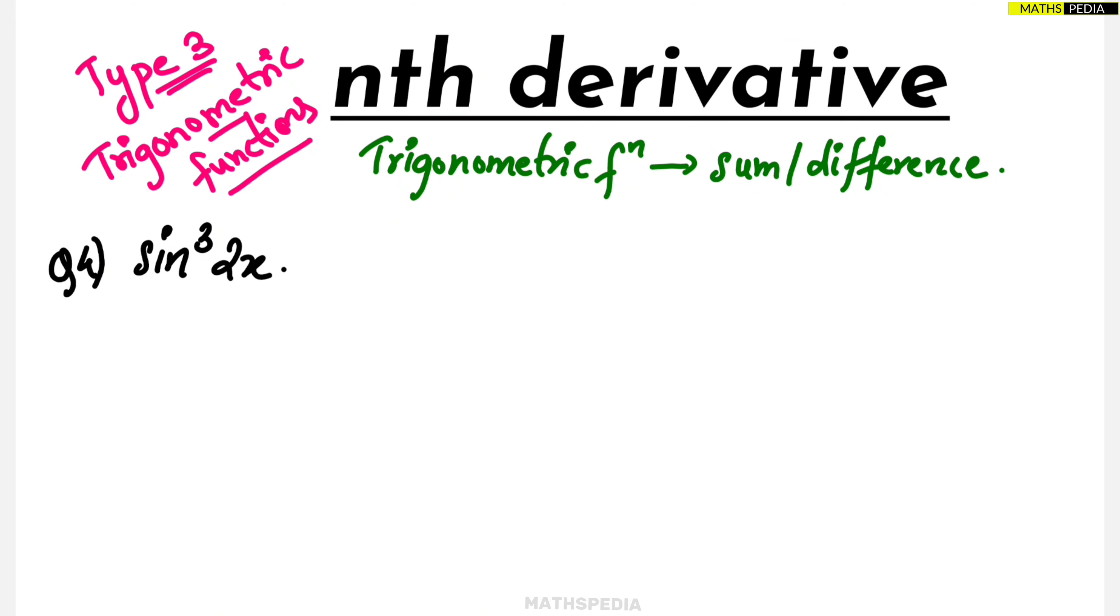Fourth question, type 3 trigonometric function. Here we have a cube. Till now we did square, now we have a cube. Whenever we're getting trigonometric cube, we always look into sine 3 theta, sine 3x, cos 3x, tan 3x. We have to take care because there only we can get some form of difference.